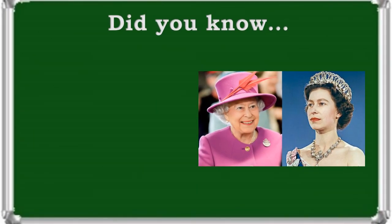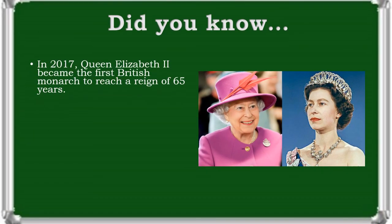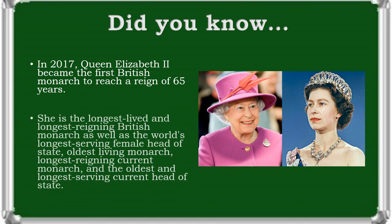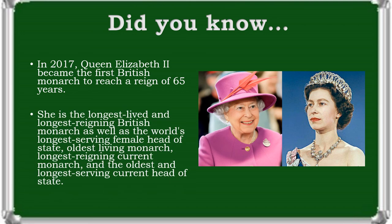In 2017, Queen Elizabeth II became the first British monarch to reach a reign of 65 years. She is the longest-lived and longest-reigning British monarch, as well as the world's longest-serving female head of state, oldest living monarch, longest-reigning current monarch, and the oldest and longest-serving current head of state.